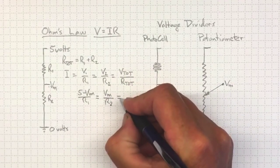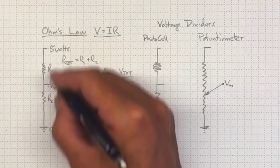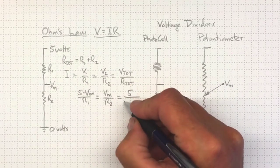And those will both be equal to five, the total voltage, divided by R1 plus R2.